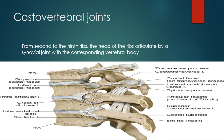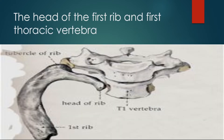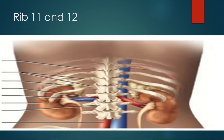Ribs two to nine articulate with two vertebrae, but the first rib articulates only with T1. The lowest three ribs also articulate with only their corresponding vertebra: rib 10 with T10, rib 11 with T11, and rib 12 with T12. So the first rib and the lower three ribs each articulate with only one vertebral body, while ribs two to nine articulate with two vertebral bodies.